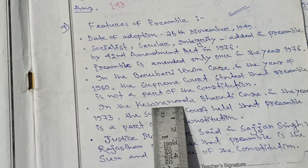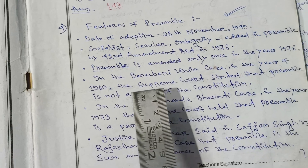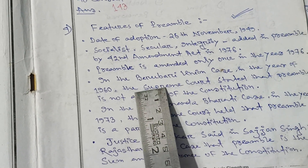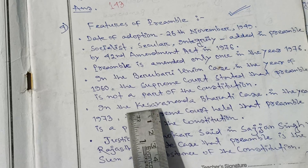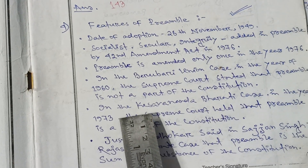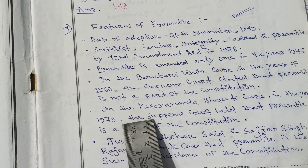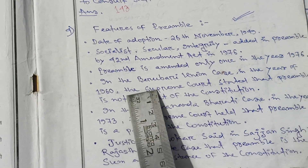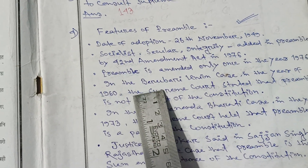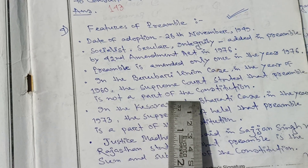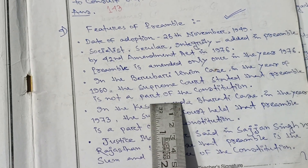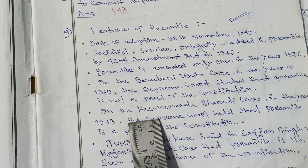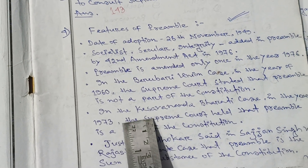These two judgments are very important. In one judgment, the Supreme Court stated that the Preamble is a part of the Constitution, while in another judgment the Supreme Court pronounced that the Preamble is not a part of the Constitution. That is why both of these cases are very important.